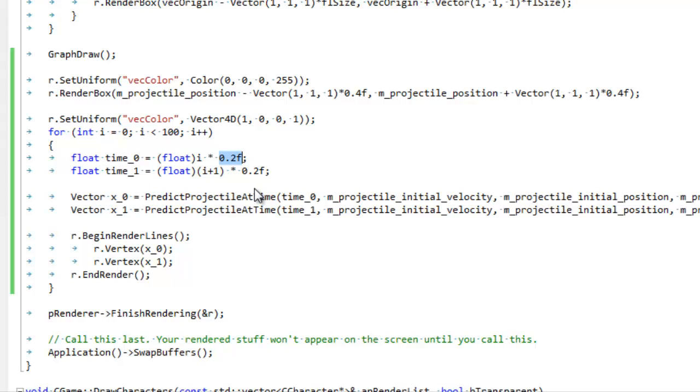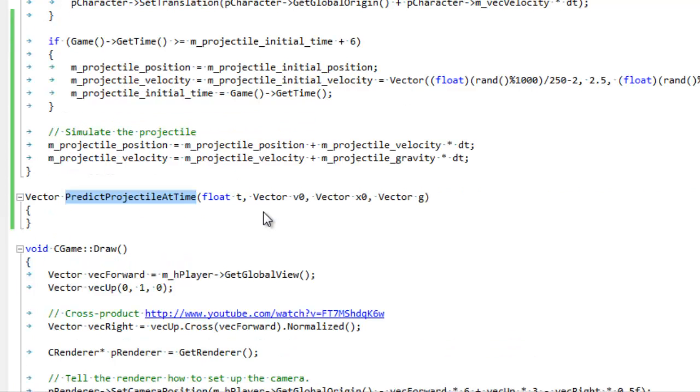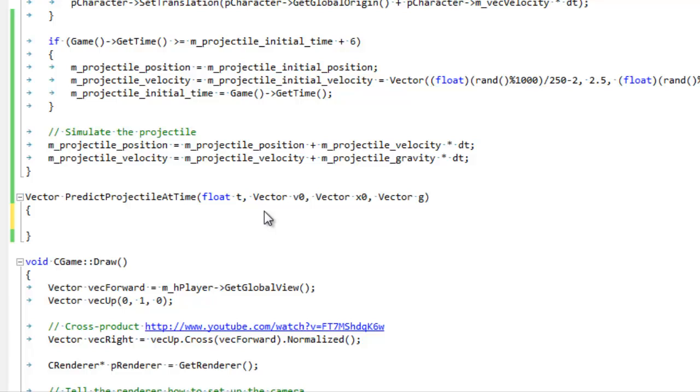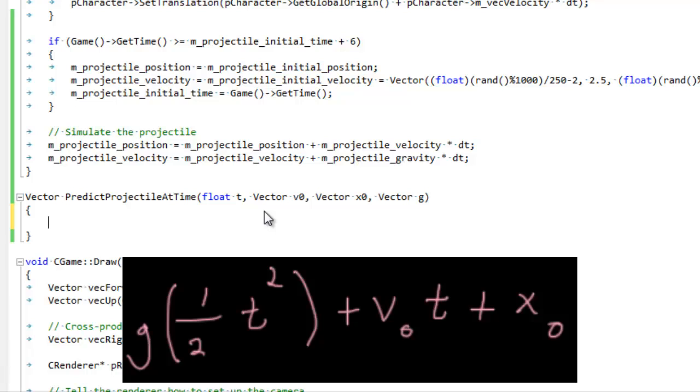This just means every 0.2 seconds we're going to have a position on the line. So let's look at our predict projectile at time. Well, it's empty because we have to fill it up with our calculus, with our polynomial that we integrated during the previous portion of the video. So let's take a look at our formula.